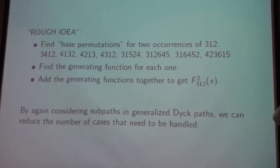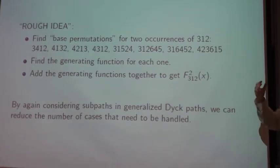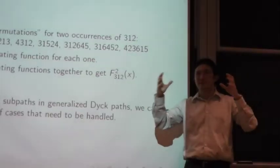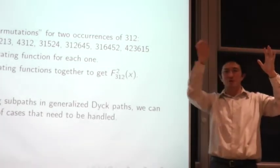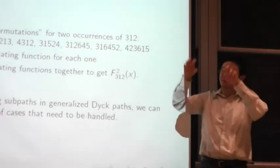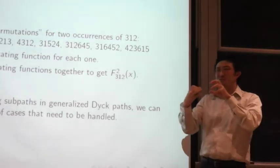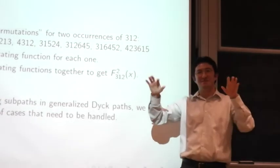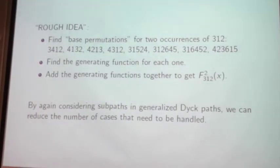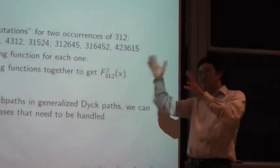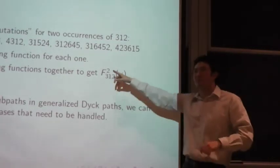Likewise, if you want length 2 permutations, so if you want to consider 2 copies of the pattern 312, the idea is that first you consider these base permutations. So in a sense, if you imagine a length n permutation that contains 2 copies of 312, take the terms that are part of the copy, strip them out of the permutation, then apply the reduction to that. And in a sense, those permutations are sort of the base permutations. So essentially the base permutations represent structurally how your 312 patterns can occur within your permutation, roughly speaking. And so the idea is that for each of these, you consider the corresponding subpaths, you find the generating functions for each one, then you add up the generating functions to get the desired F2.